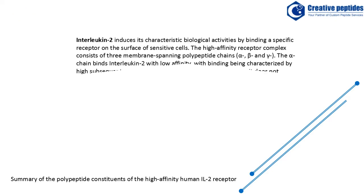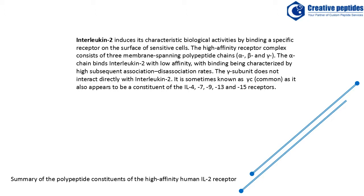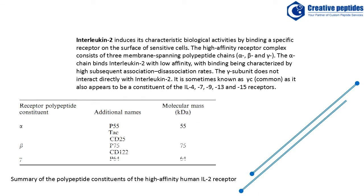Interleukin-2 induces its characteristic biological activities by binding a specific receptor on the surface of sensitive cells. The high-affinity receptor complex consists of three membrane-spanning polypeptide chains: alpha, beta, and gamma. The alpha chain binds interleukin-2 with low affinity, with binding being characterized by high subsequent association-dissociation rates.